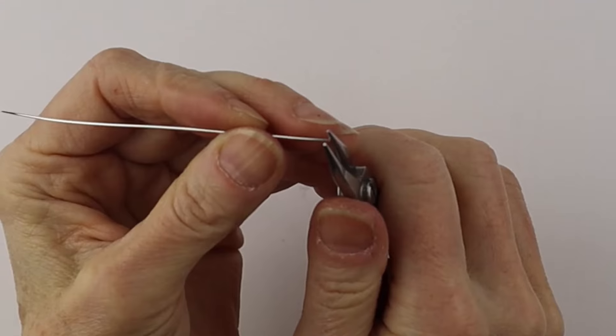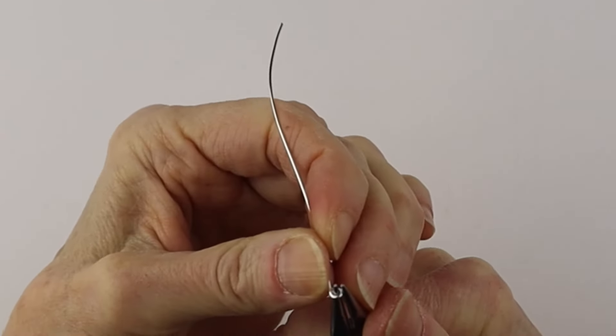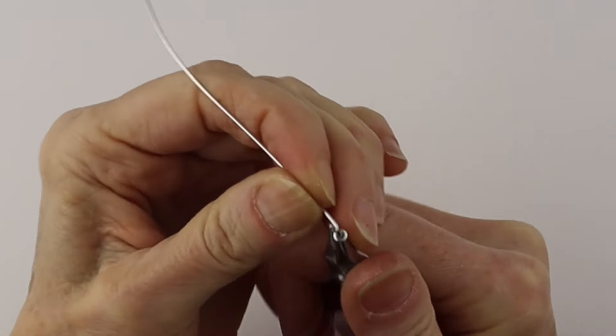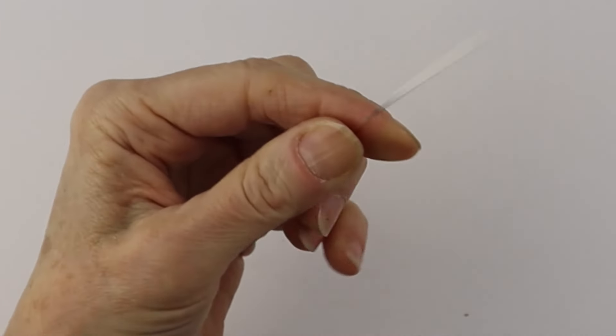Clip the end and make a little loop. You can also use a head pin instead of this wire.